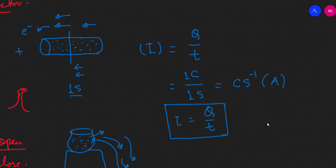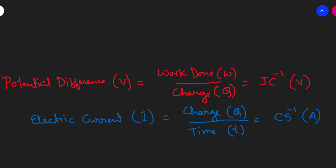The cross-section of a conductor carries a charge of Q per unit time T. The potential difference is the work done divided by the charge. The unit of potential difference is Joules per Coulomb, which is the Volt. The electric current symbol is I, which is charge per unit time, in units of Coulombs per second, which is the Ampere. The formula is I = Q divided by T.